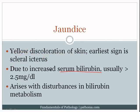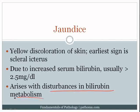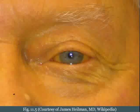Jaundice is due to an increased serum bilirubin, classically greater than 2.5 milligrams per deciliter. Because it's due to an increase in serum bilirubin, we're going to see it when there are disturbances in bilirubin metabolism. Here's a picture of a patient with jaundice — notice the yellow skin.